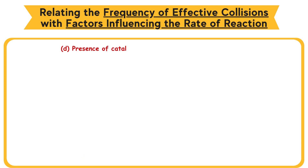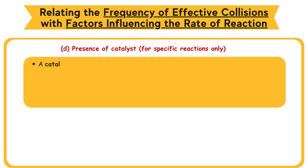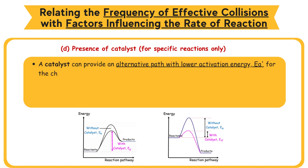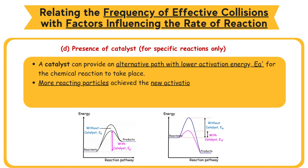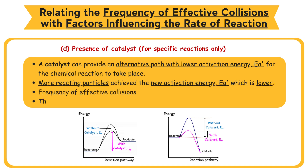d. Presence of catalyst (for specific reactions only): Catalysts can provide an alternative path with lower activation energy EA for the chemical reaction to take place. More reacting particles achieve the new activation energy EA, which is lower. Frequency of effective collisions increases. The rate of reaction increases with the presence of a catalyst.